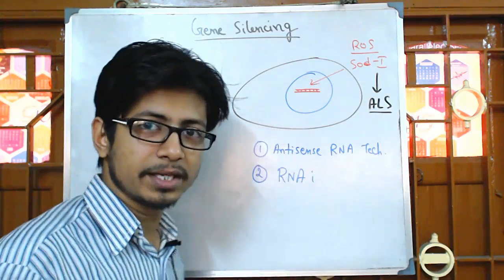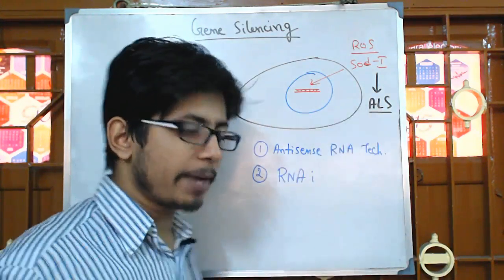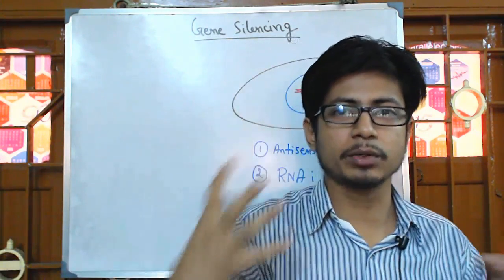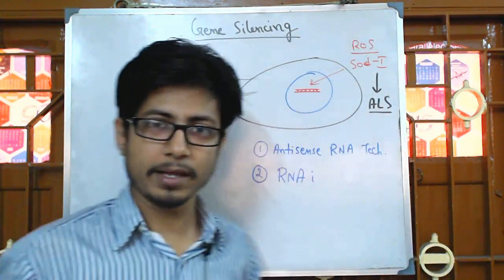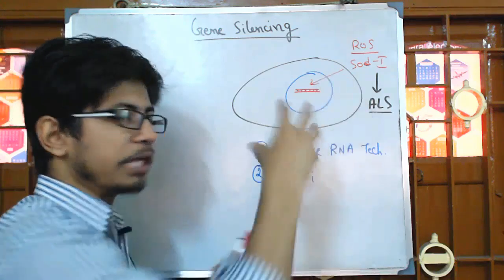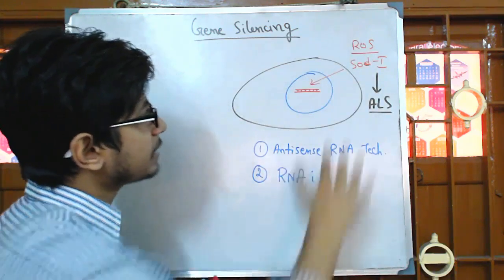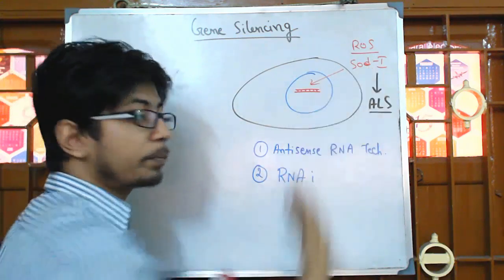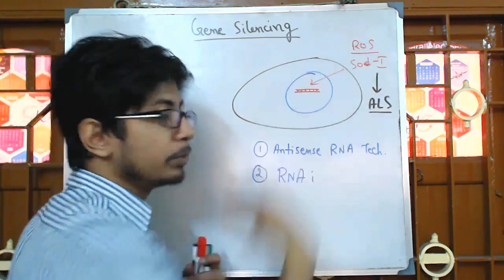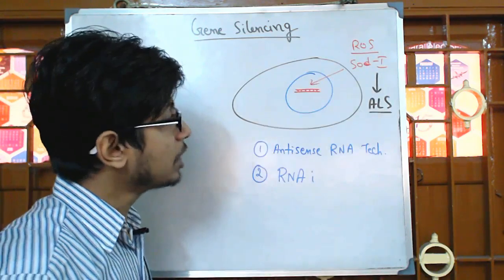A mutated SOD1 creates the degradation of nerve cells in our brain, which is linked with the disease ALS. In ALS, the brain cells start to die because they are much more vulnerable to damage by ROS. SOD should protect us, but if it has a mutation, it cannot, and as a result it can cause ALS.